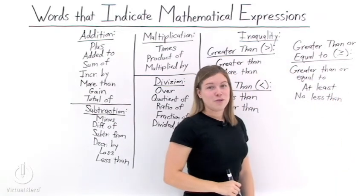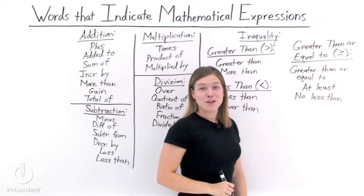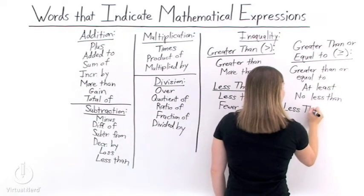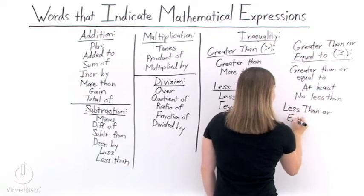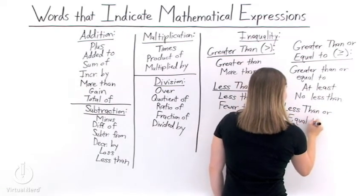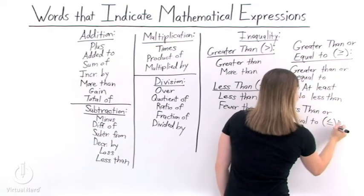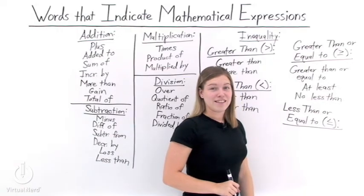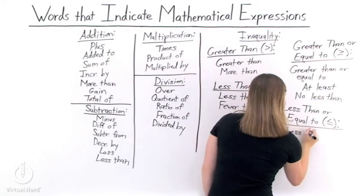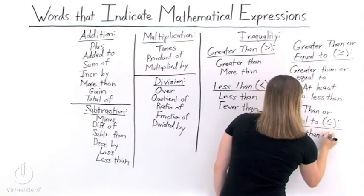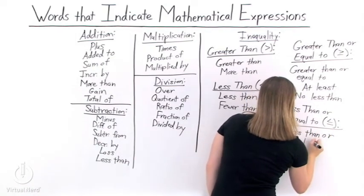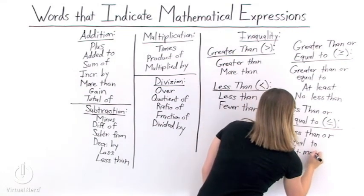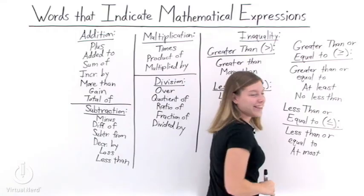Since we have greater than or equal to, we must also have less than or equal to. The inequality less than or equal to is very similar to just less than, except it has an equal-to line underneath the less than symbol. Phrases that mean less than or equal to include 'less than or equal to,' 'at most,' and 'no more than.'